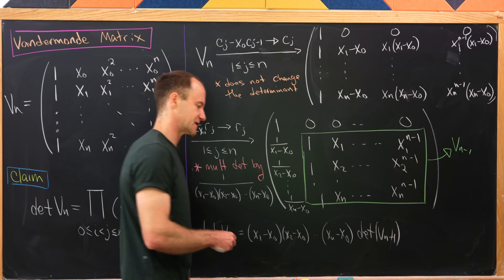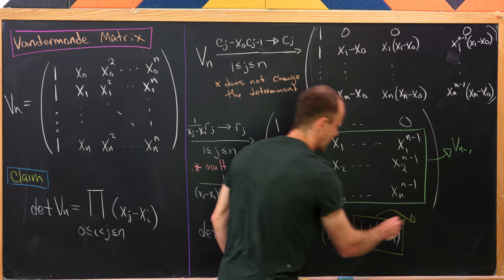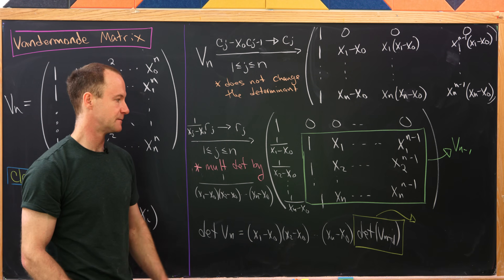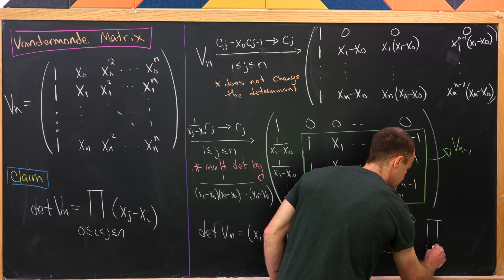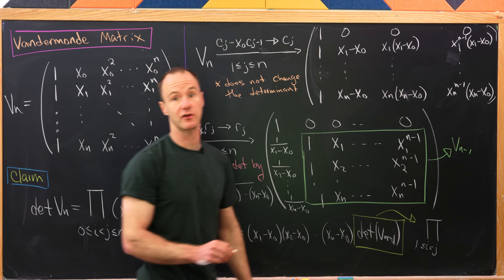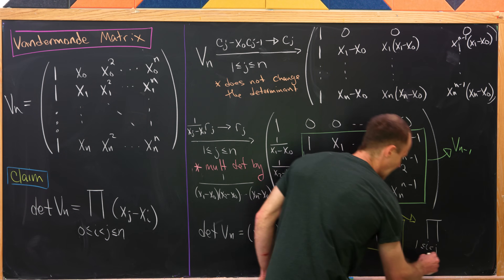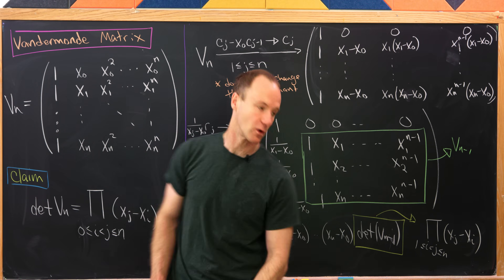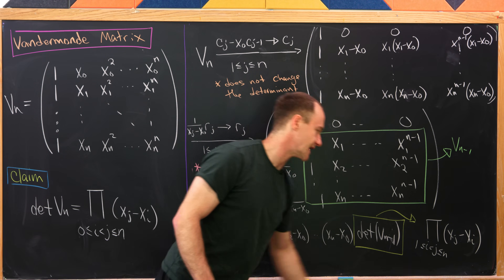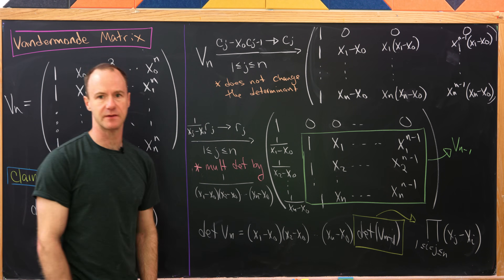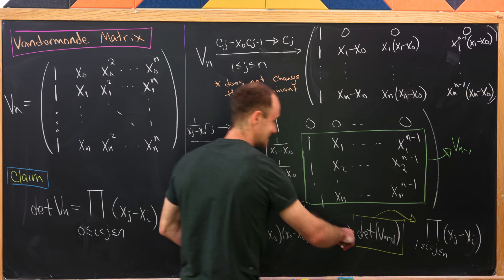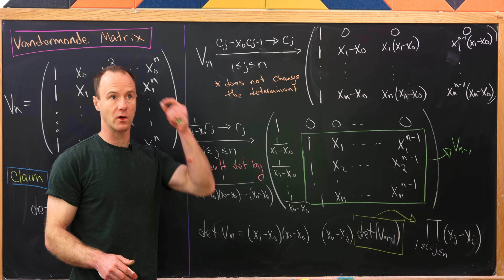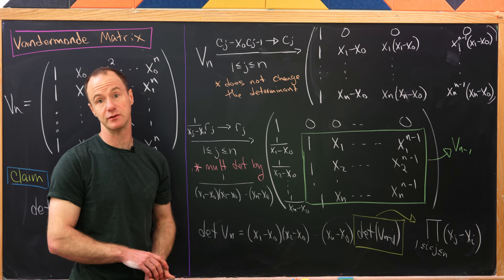Now we apply an induction hypothesis, which assumes we already know the formula in the (n-1)st case. That gives us the product where i < j, both at least 1 and at most n, of xj minus xi. The only terms missing from the full formula are those with i = 0, but those are exactly the factors we picked up from the row operations. Pushing those in completes the product, and we've proven the Vandermonde determinant formula.